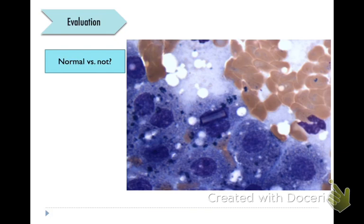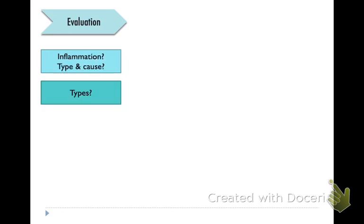Here we have a picture of liver. And here is a crystal that we can sometimes see in the cytoplasm of the liver. It's just a normal finding, although a little bit infrequent. If you have inflammation, you want to think about the type and if there's any cause for that inflammation being there.